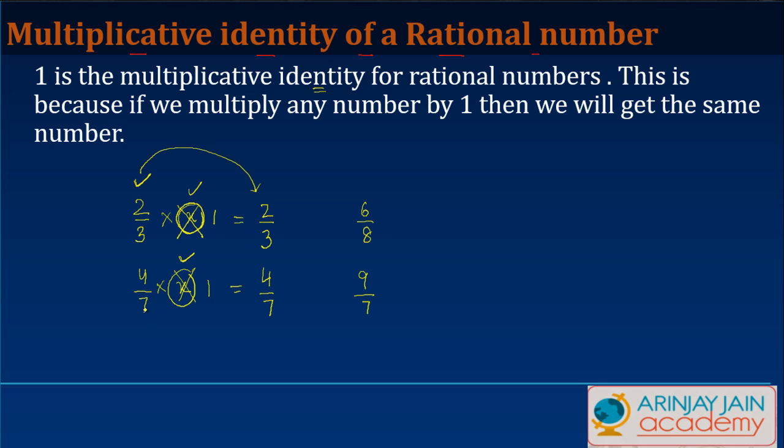Why? Because we know that any number multiplied by 1 gives the number itself. How does it make a difference if this number is actually a rational number?